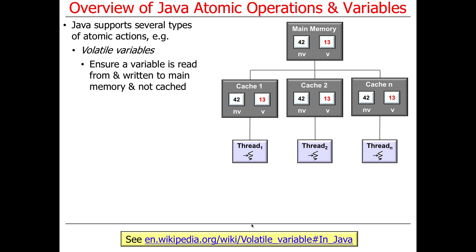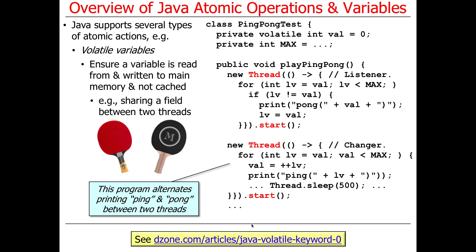If a variable is marked as volatile, writing a value like 13 will write through the cache to main memory, such that when another thread reads from that variable, it will get the value 13. In contrast, writing to a non-volatile location may take a while — or forever — for data to propagate to other caches. Essentially, volatile means atomic read and write of the value. Here's a simple ping-pong example.